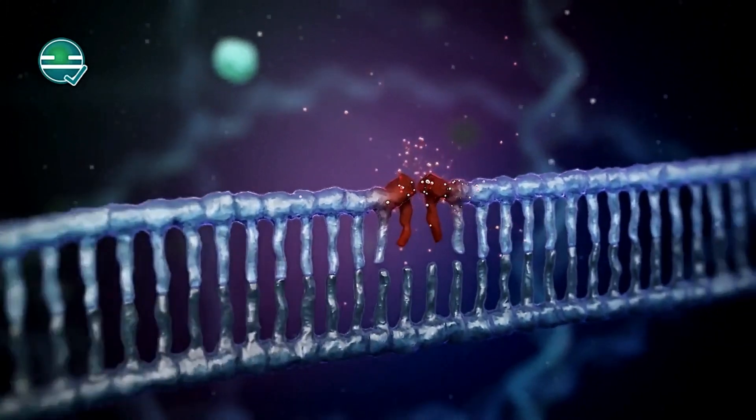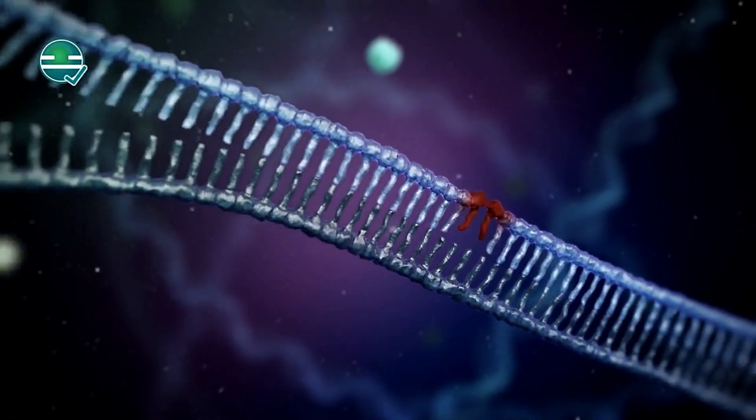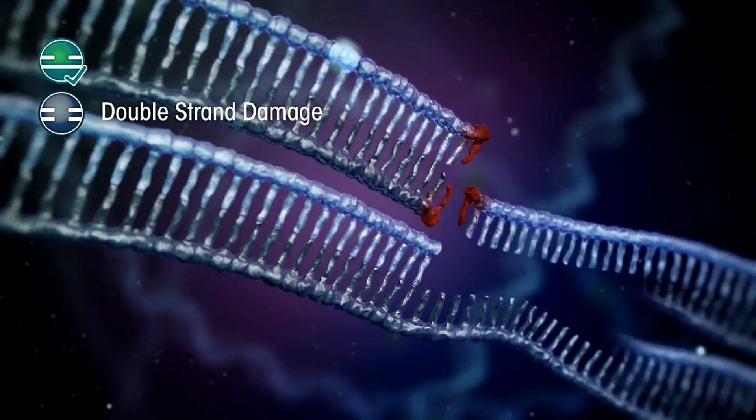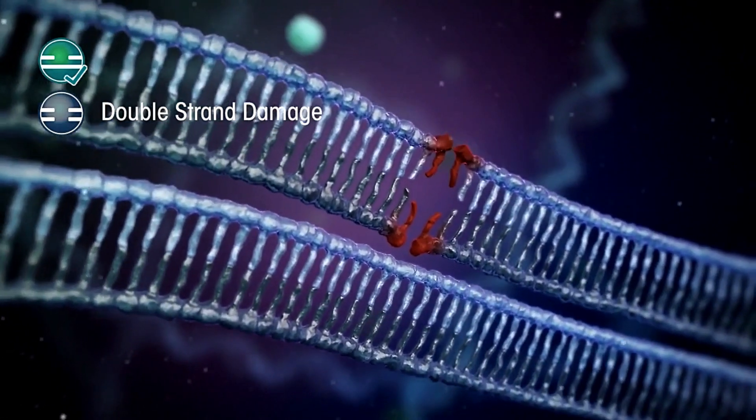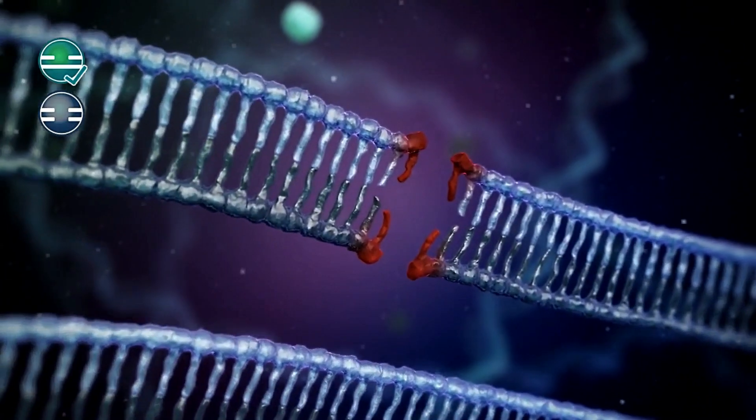As we get older, our cells lose the efficiency to fix these damages. As a result, the information is gradually lost, and the cell's functionality starts to decline. The organ stops working, and we die.